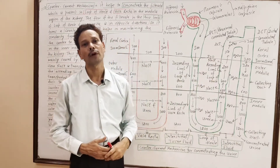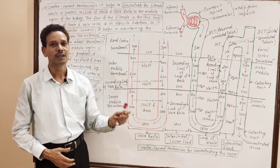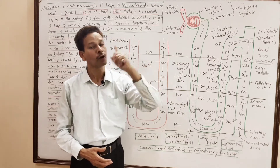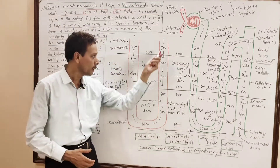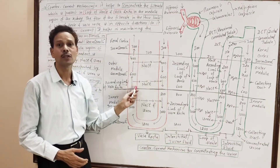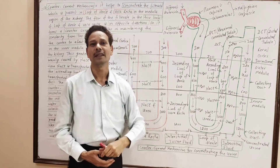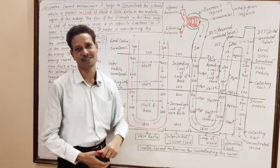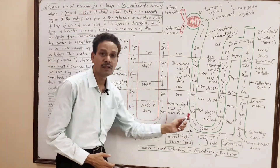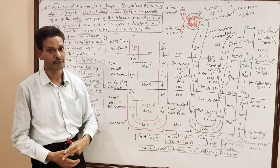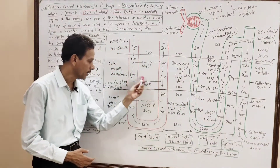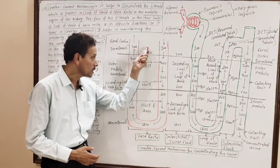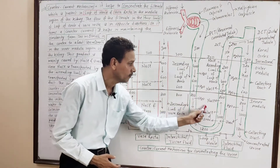This mechanism conserves body water. This is all about the counter current mechanism of urine formation — an important topic for BSc and all competitive exam students. Counter current means opposite flow in both limbs of the vasa recta and loop of Henle. Two counter currents operate: one in the loop of Henle and one in the vasa recta. The overall function is to concentrate the interstitial tissue fluid.